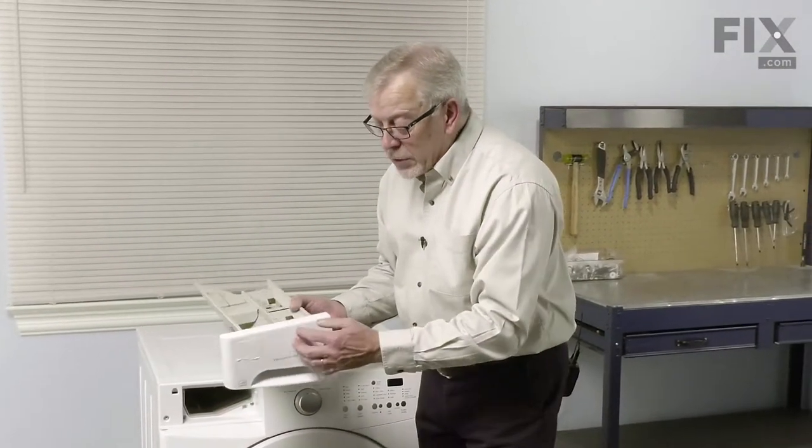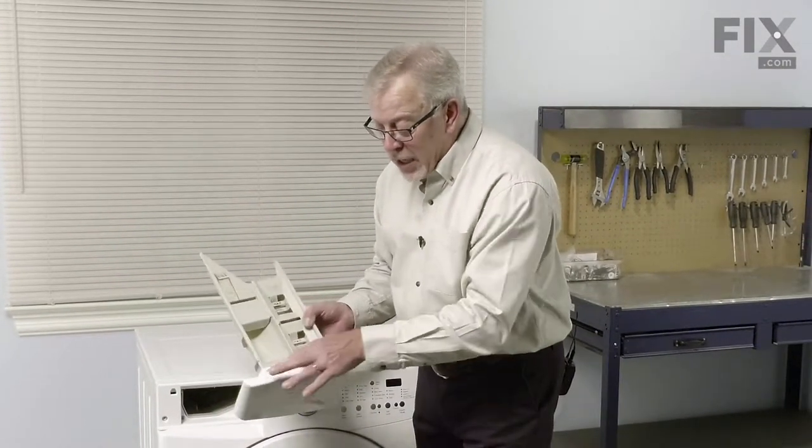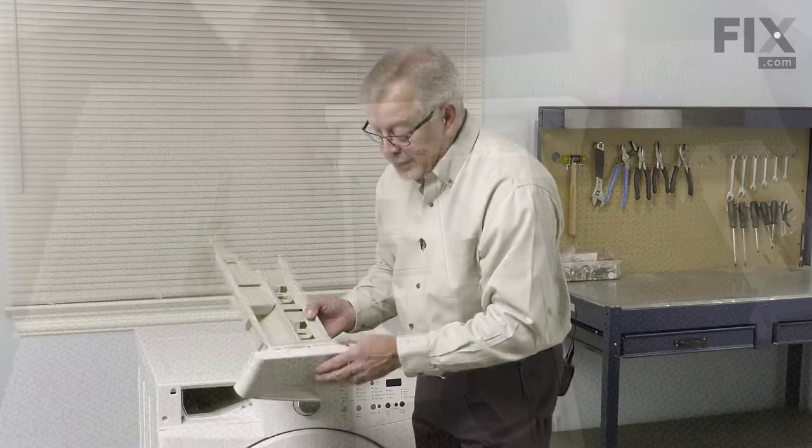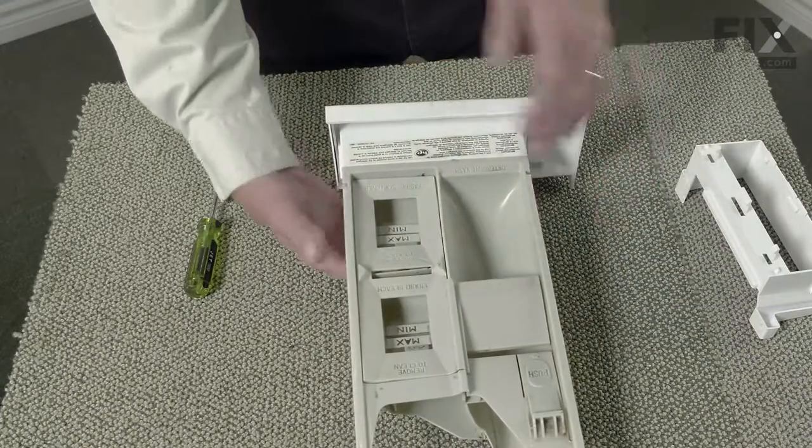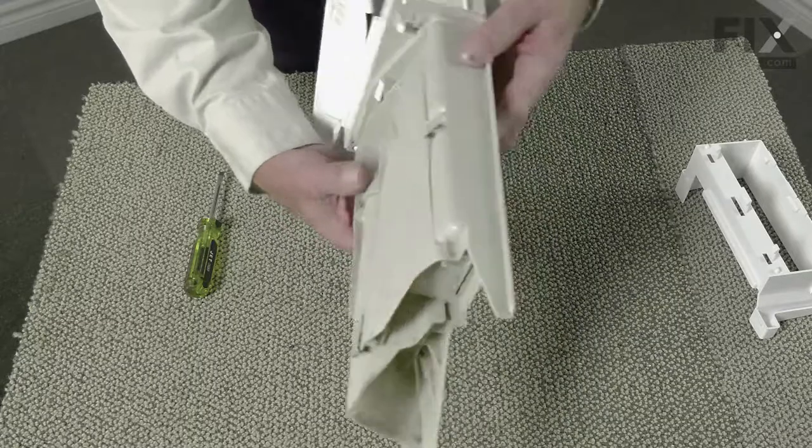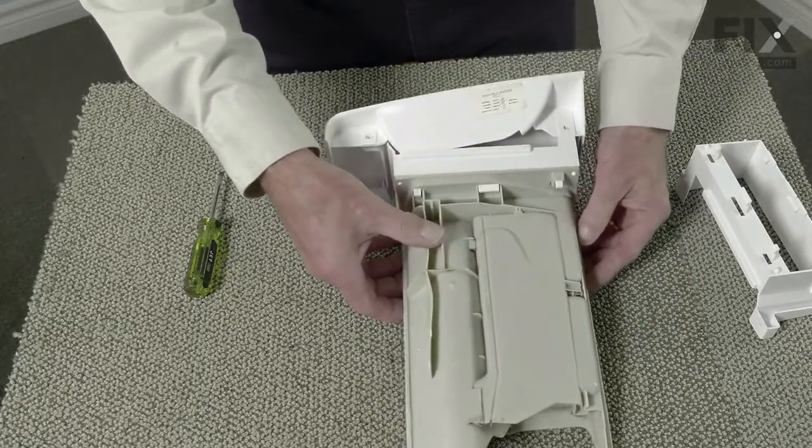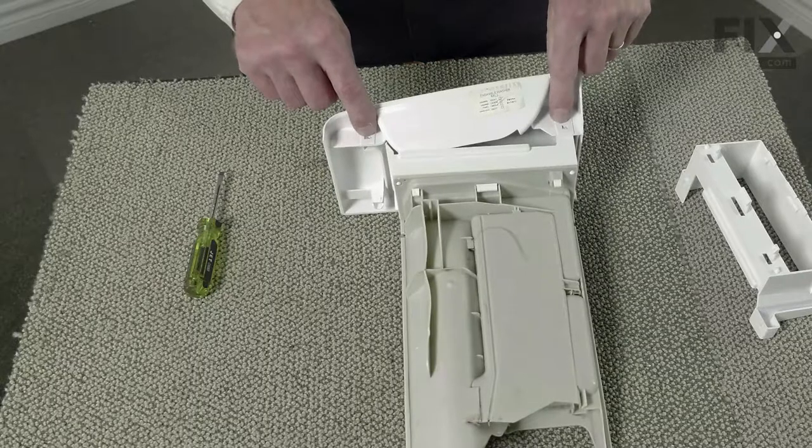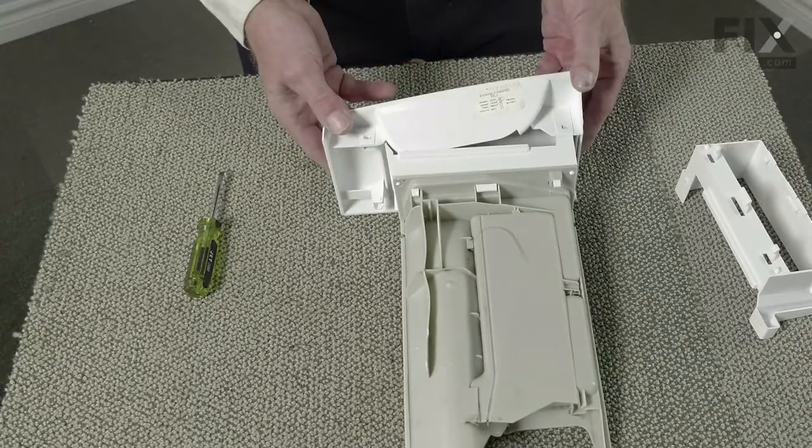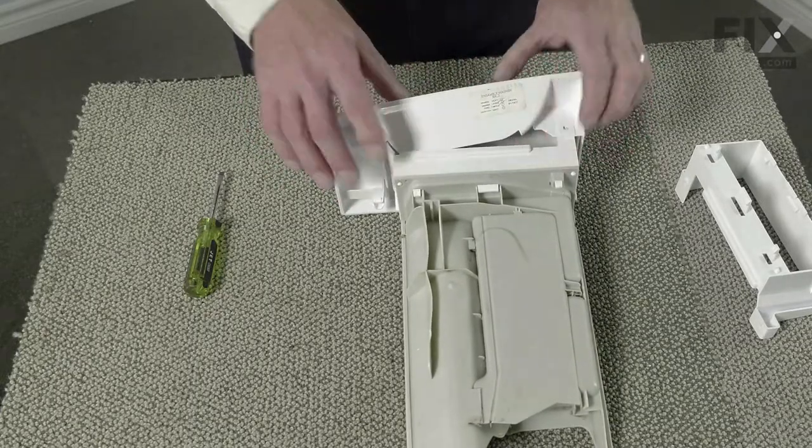Now if the front is still on your dispenser we'll need to remove that first, and then we can change out the handle. With the dispenser drawer on a work surface, we're going to begin by turning it upside down, and then we'll locate these two tabs that secure the front panel to the actual handle.